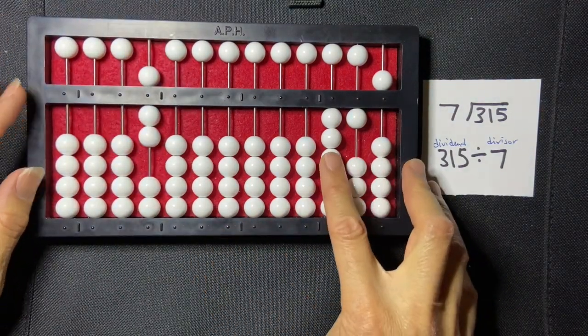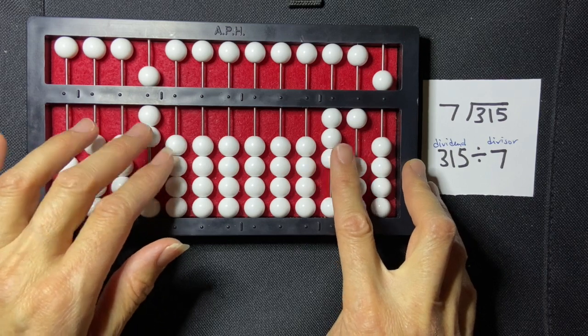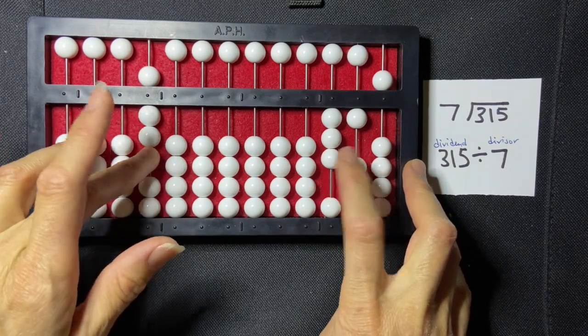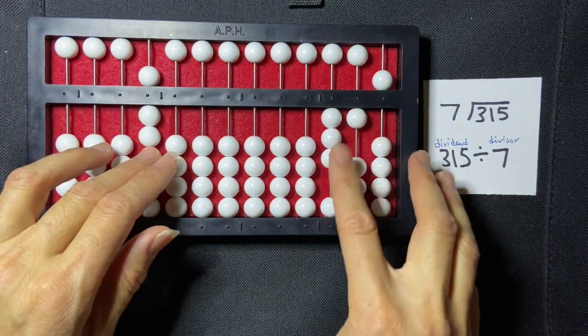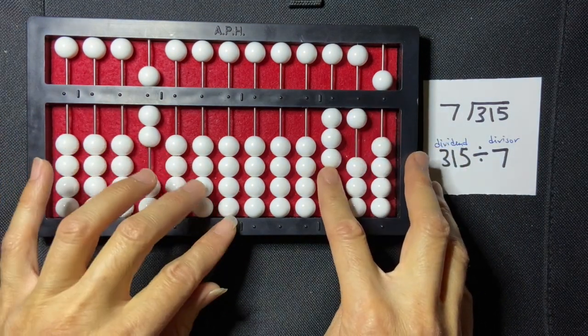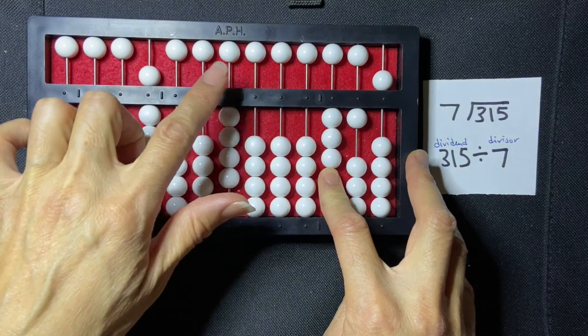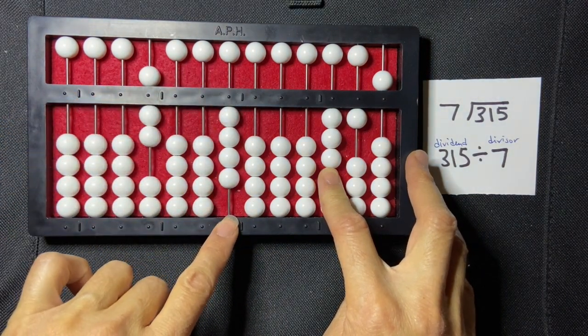So what I'm going to do is start by comparing the 3 and the 7. How many groups of 7 can go into 3? None. So how many groups of 7 can go into 31? That's going to be 4. So I'm going to set 4 here in the units column of my millions period.